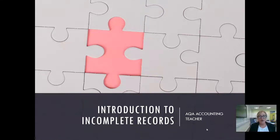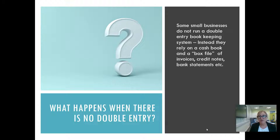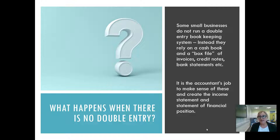Welcome to AQA Accounting Teacher. We're going to have a look at an introduction to incomplete records. This is a year two topic for A-level studies, or an AAT level three topic. So what happens when there is no double entry? Some businesses do not run a proper double entry bookkeeping system. It does happen — very commonplace in practice.